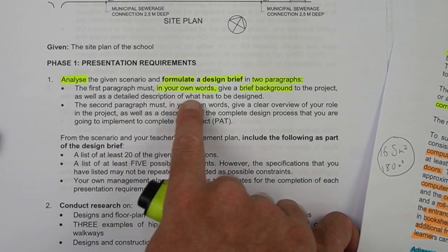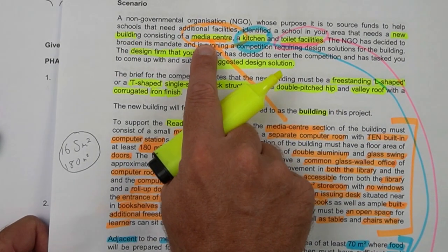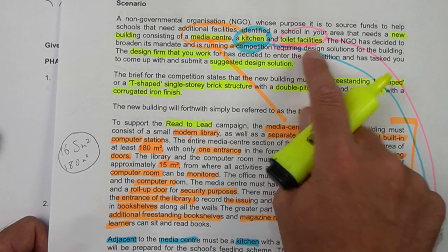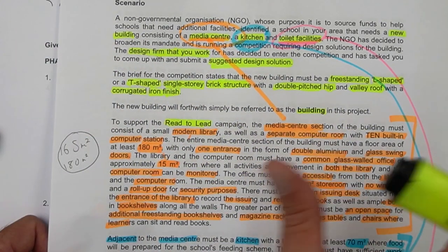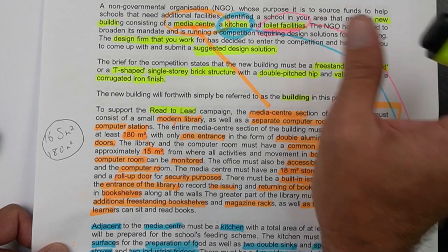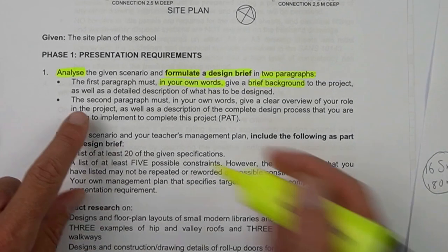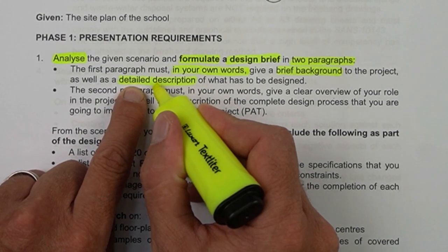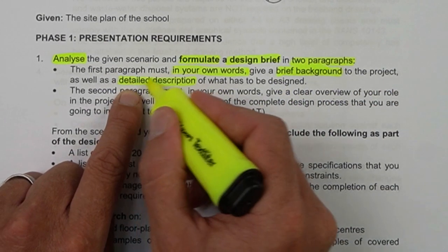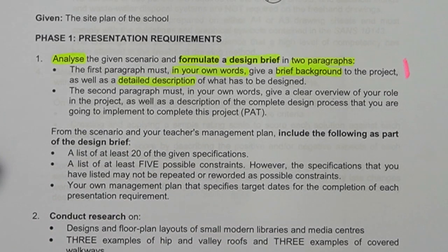You also need a detailed description of what has to be designed. You're going to design a media center with a kitchen and toilet facilities, and you can touch on the fact that this media center will have a library part but also a computer room part, the kitchen will have storage, etc. Don't elaborate too much with detailed specifications - it's only a brief background and a detailed description. All of this must be in one paragraph of about six or seven lines.